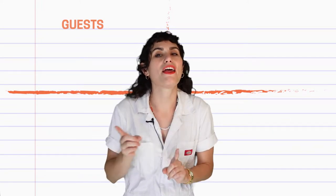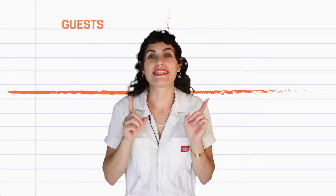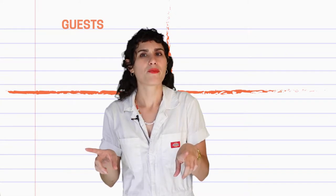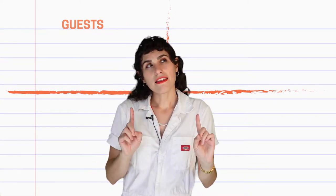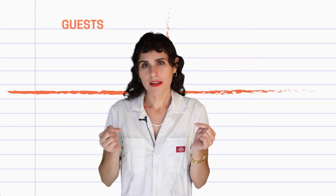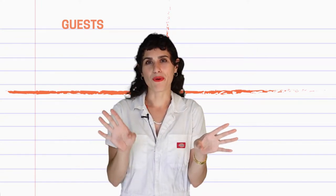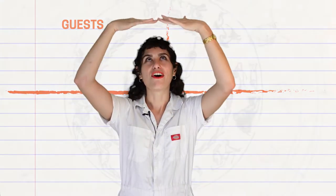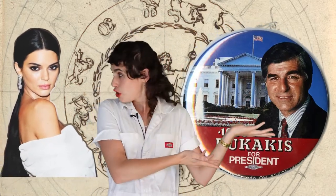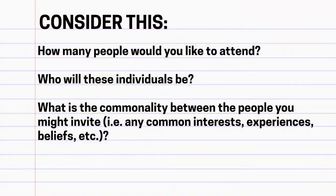Or maybe you invite all the people who have the same name as you? I think for my dinner party, I'm going to invite all the people who were born under the sign of Scorpio — supermodel Kendall Jenner, and former Democratic presidential candidate Michael Dukakis! Now take a moment to brainstorm your ideas.